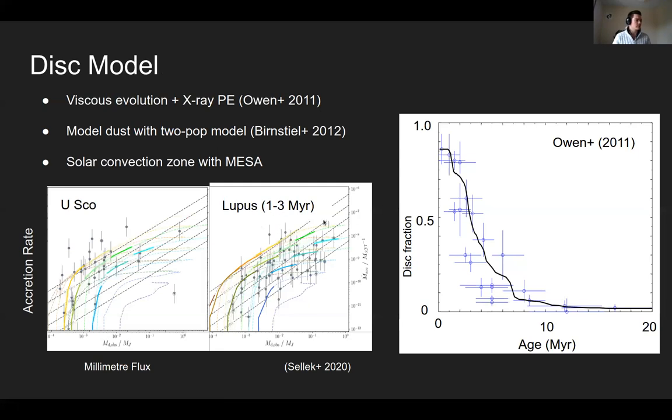So Lupus here is a relatively young region, up to three million years, and also in Upper Scorpius. The models work, five to eight million. So we think we're on more or less the right track here with understanding how the accretion onto the star and the dust masses are evolving in the disks.